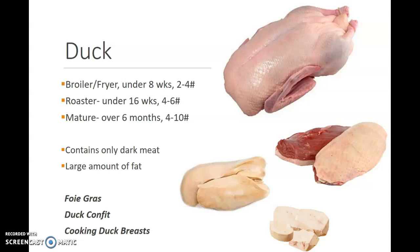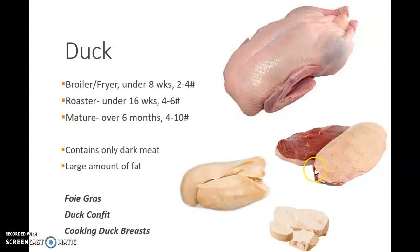A mature duck is over six months old and is four to ten pounds. Duck contains only dark meat, and it has a large amount of fat, actually given a rep for being a very fatty poultry item. Here you can see the large layer of fat that is on top of the breast. When we are cooking the duck breast, it's important to score the fat just through the fat, not through the meat, as you'll see in the following video — it will allow all this fat to melt out and incorporate a lot of flavor into the duck breast.